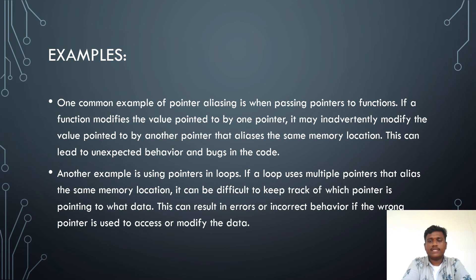Now we will see some examples. One common example of pointer aliasing is when passing pointers to functions. If a function modifies the value pointed to by one pointer, it may also modify the value pointed to by another pointer that aliases the same memory location. This can lead to unexpected behavior and bugs in the code.